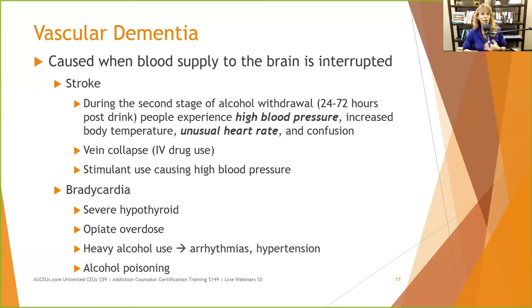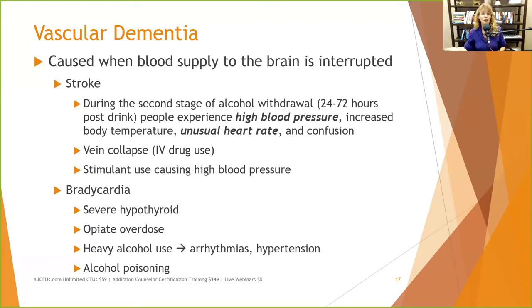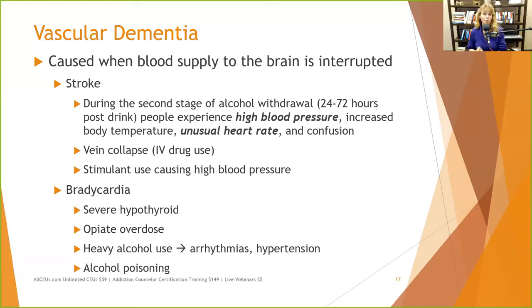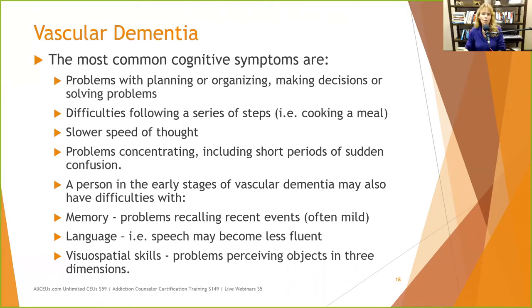Bradycardia — too slow a heart rate — can be caused by severe hypothyroid or opiate overdose, which slows respiration and heart rate to literally nothing, cutting off blood supply to the brain. Heavy alcohol use produces arrhythmias and hypertension that disrupt brain blood access. The alternating too-fast and too-slow rhythm of arrhythmias really disrupts the system. Alcohol poisoning — drinking too much of a CNS depressant — causes people to black out and pass out, as it can slow heart rate, slow breathing, and cause the brain to not get the oxygen it needs.